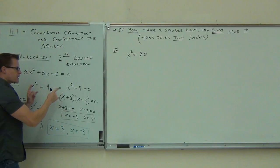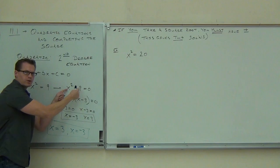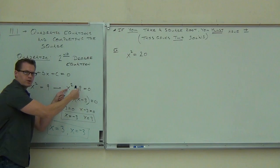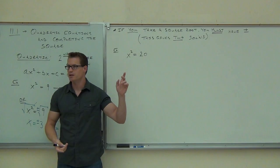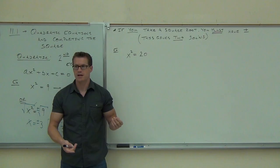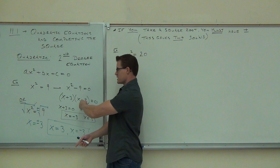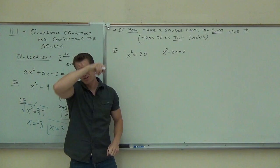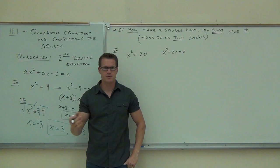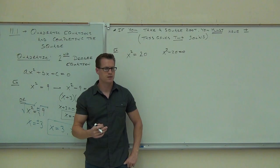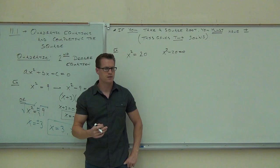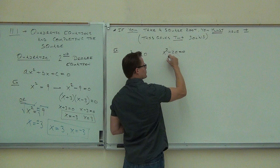x squared equals 20. In our previous case with x squared equals 9, we could subtract 9 and factor difference of squares. Will that work here? If you subtract 20 you'd have x squared minus 20. Can you factor x squared minus 20? Not easily — 20 is not a perfect square. However, we still have x squared equals a number. What undoes x squared? A square root.